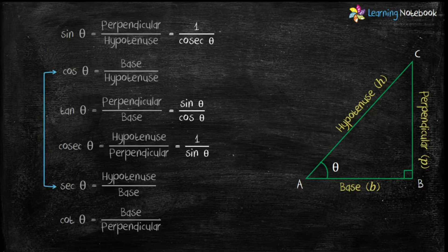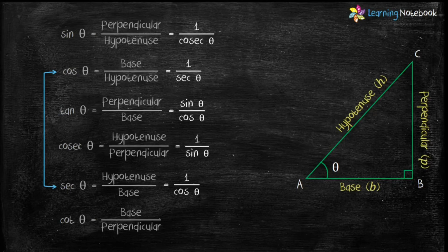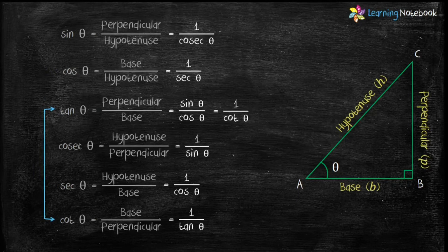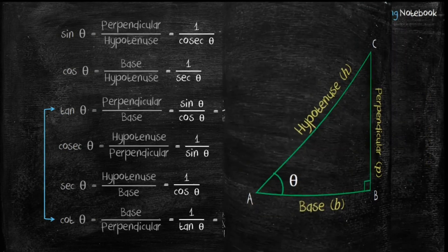Similarly, cos theta equals 1 by sec theta, and sec theta equals 1 by cos theta. Also, cot theta equals 1 by tan theta, and tan theta equals 1 by cot theta. Since tan theta equals sin theta upon cos theta, therefore cot theta equals cos theta upon sin theta. So these are the relationships between the trigonometric ratios.